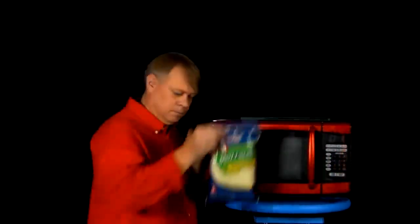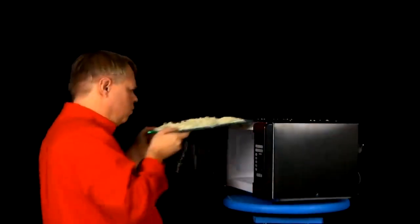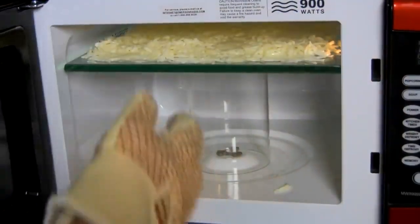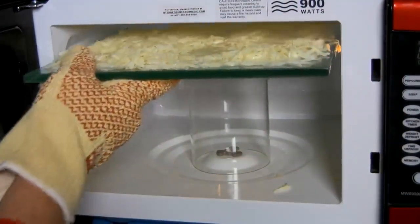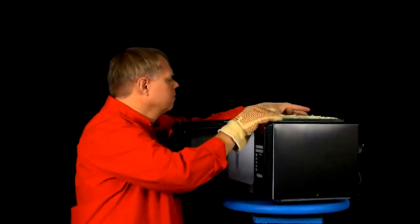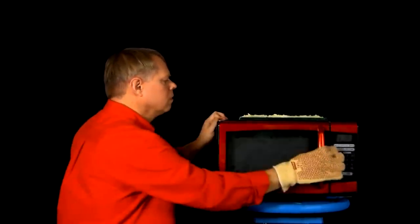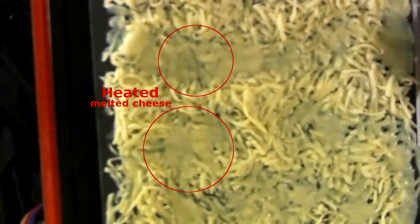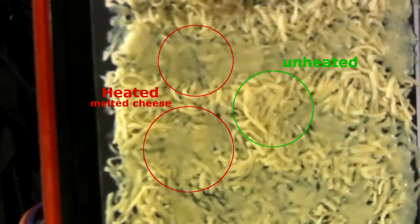Now, you can get an idea of the wavelength of the energy emitted from the magnetron using cheese. Now, you can see on here sections where the cheese is completely melted and other sections where it's completely unheated.